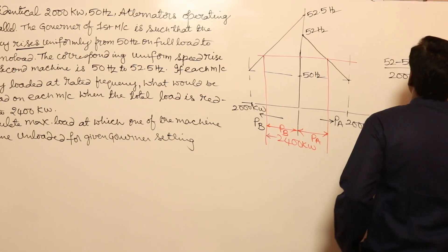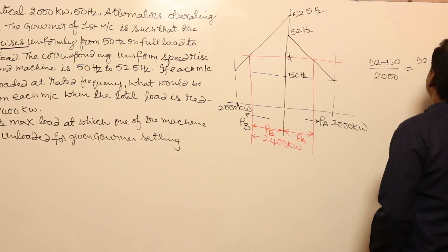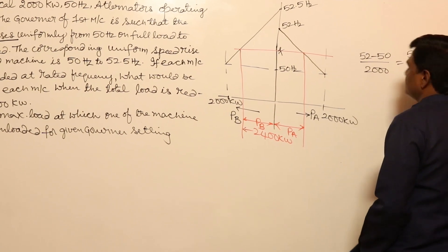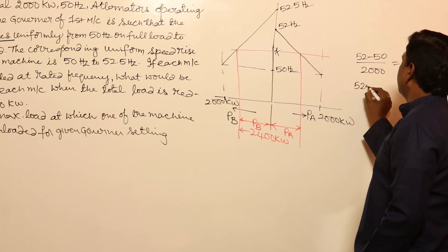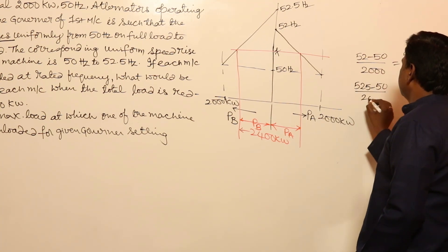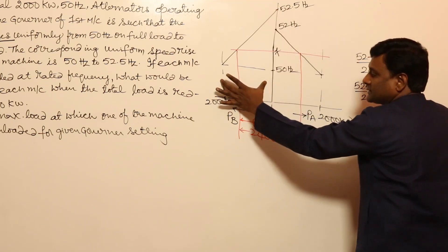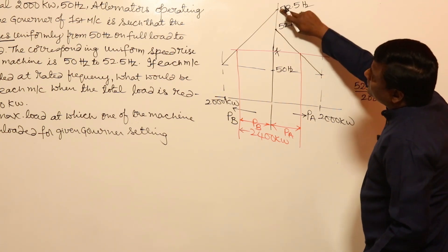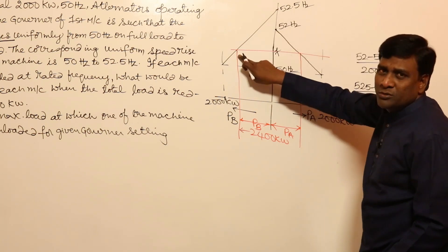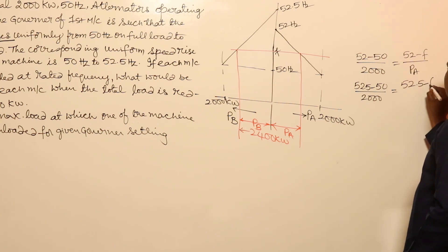For the first machine, the slope is: (52 minus 50) divided by 2000 equals (52 minus f) divided by Pa. For the second machine, the slope is: (52.5 minus 50) divided by 2000 equals (52.5 minus f) divided by (2400 minus Pa). The same slope applies consistently along each characteristic line.